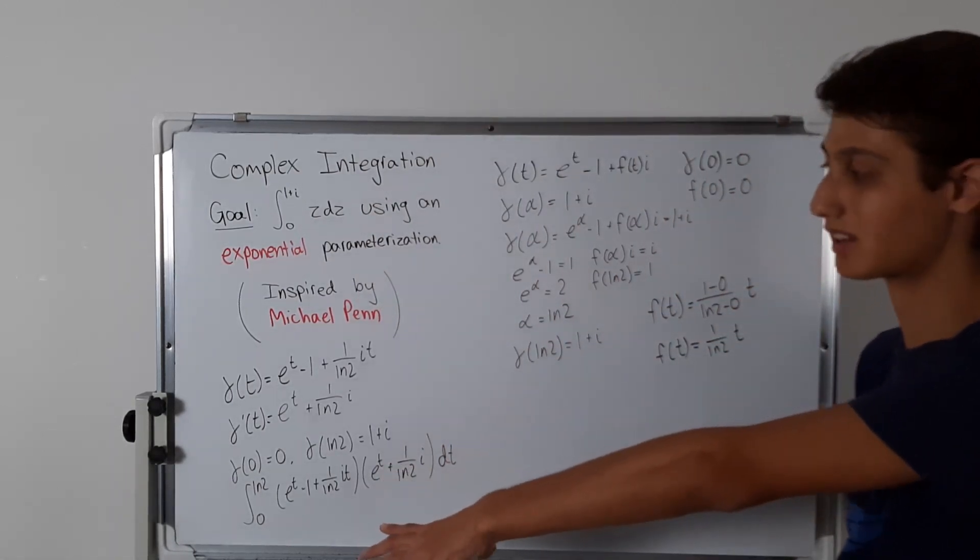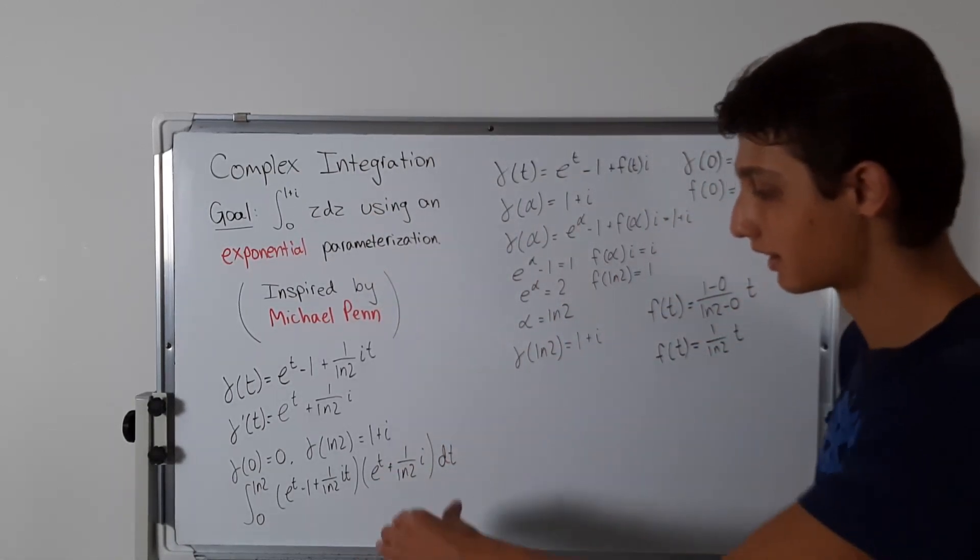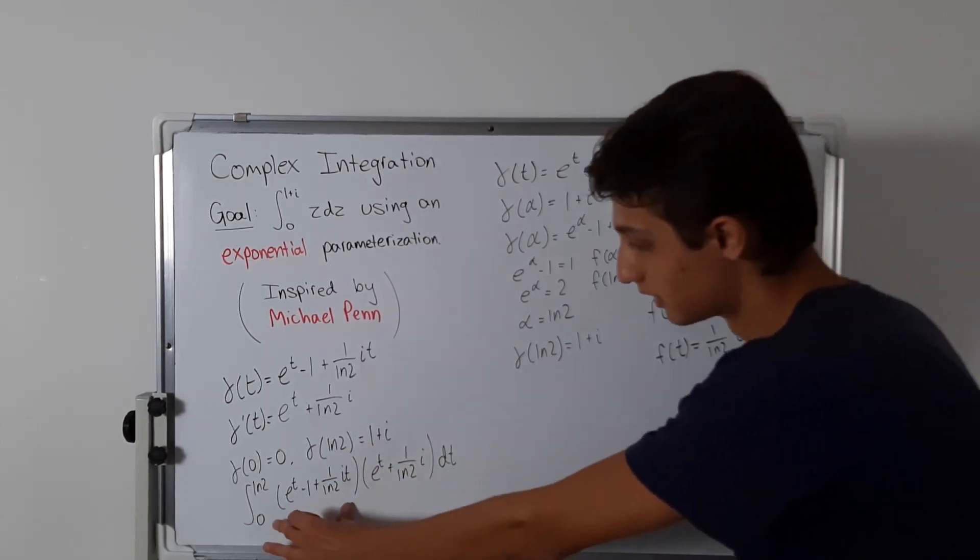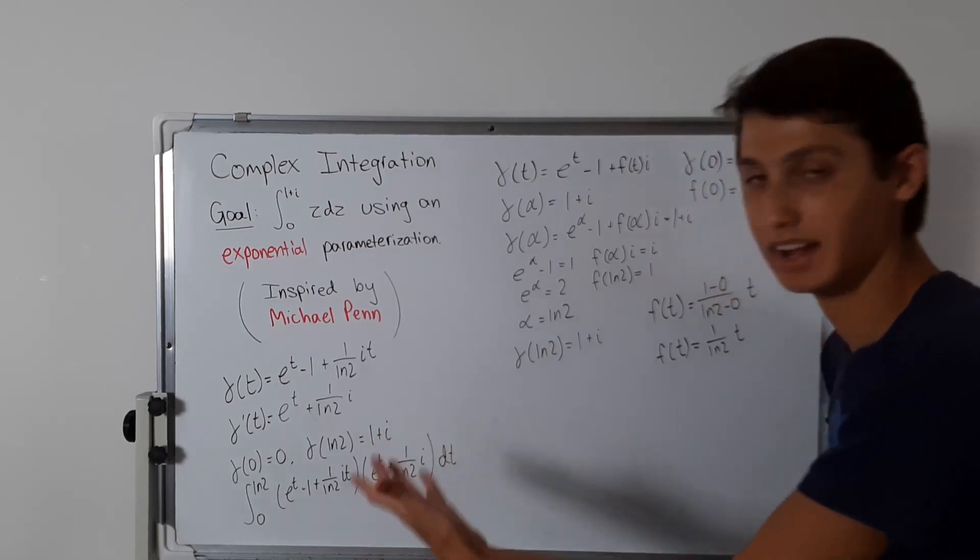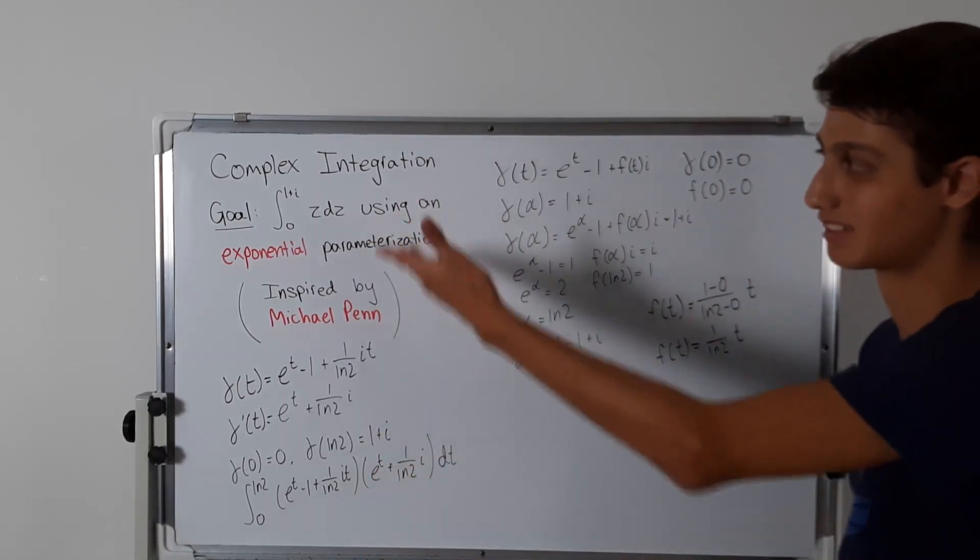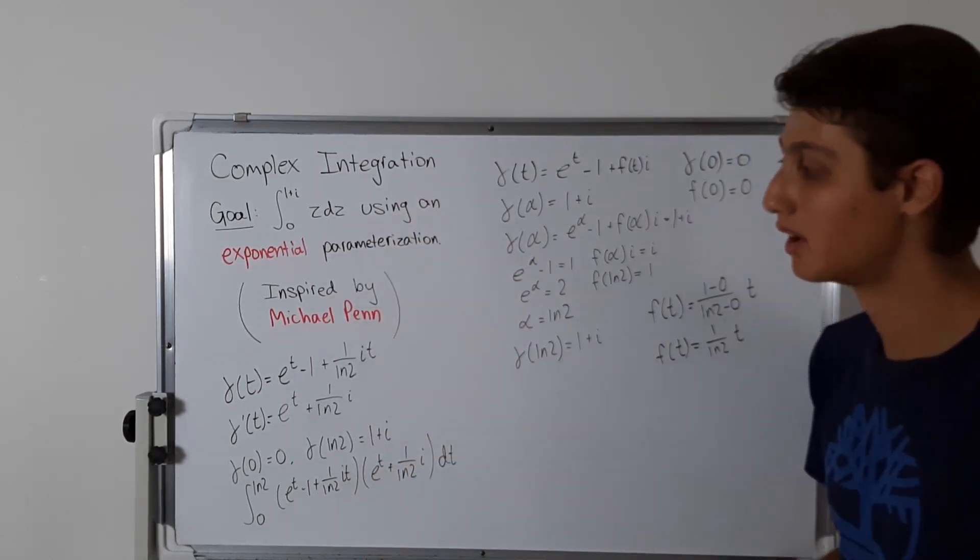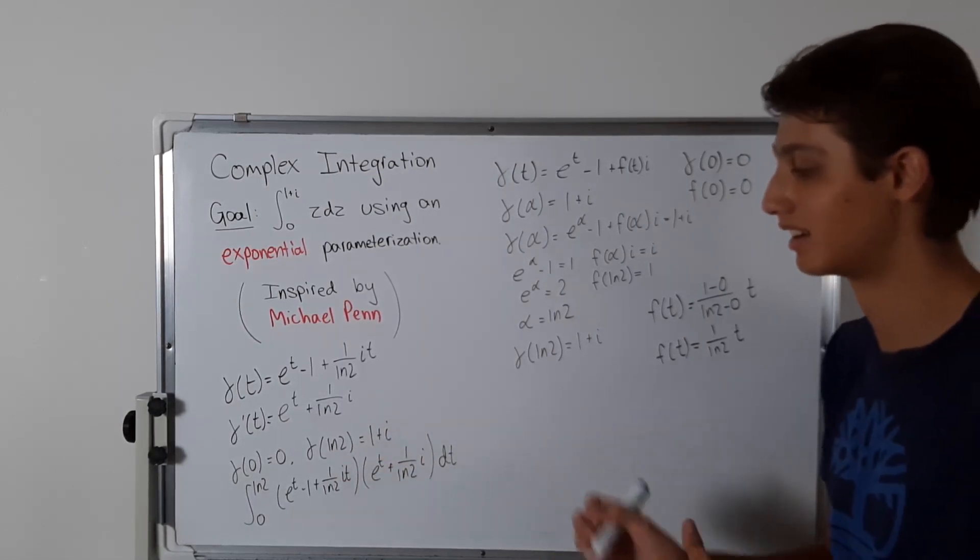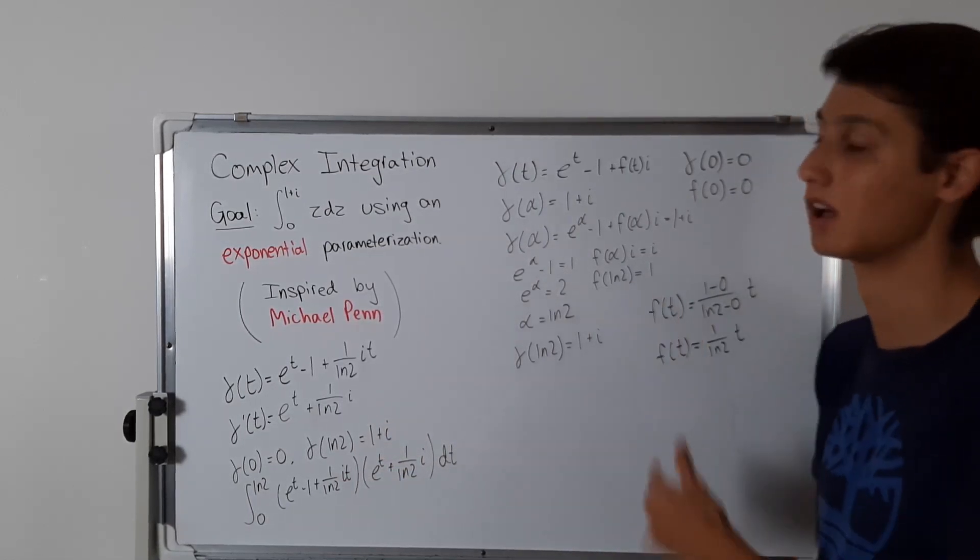This is the integral we're going to evaluate. You might think, okay, let's just do a quick substitution, set u equal to this and du equals that. But that's just going back to where we started. We want to actually evaluate this completely, because otherwise that defeats the whole purpose of doing all this anyway.